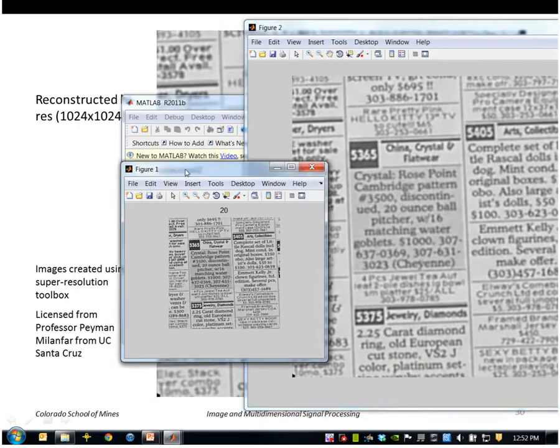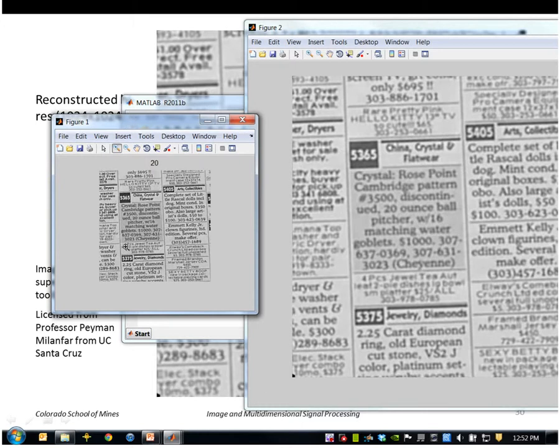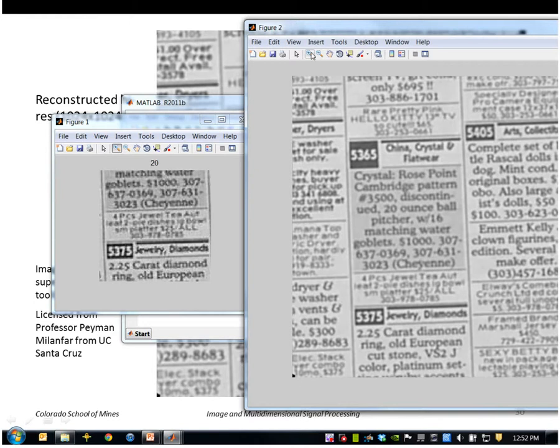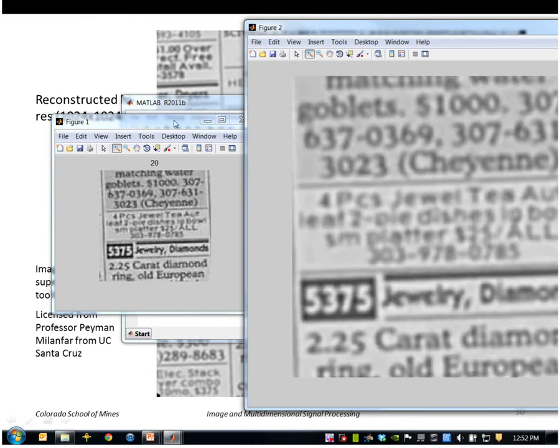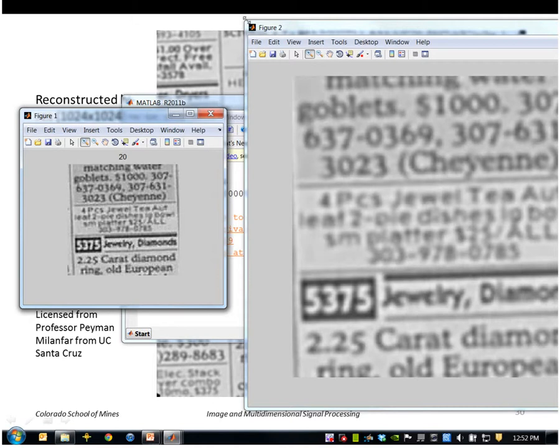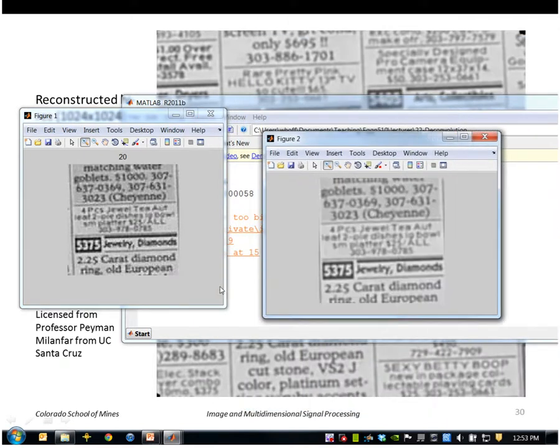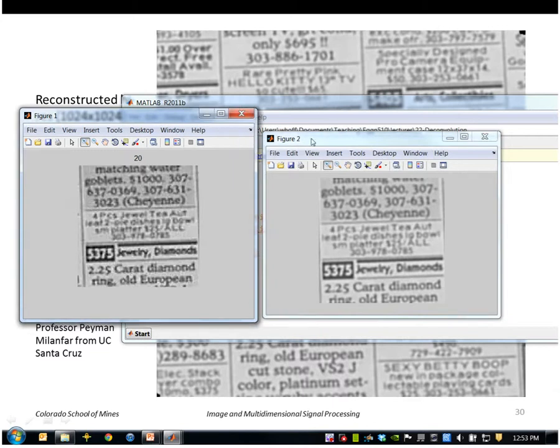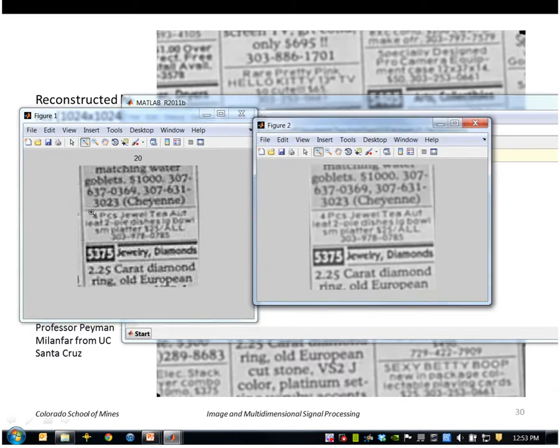Let me just blow up one of these areas so you can compare them. Let's say this part right here and the corresponding part here. I'll make them both the same size. Okay, so those are about the same size so you can compare that portion of the image. Here it's not readable but here it is kind of barely readable. So that's the kind of things you can do with super resolution to restore images.